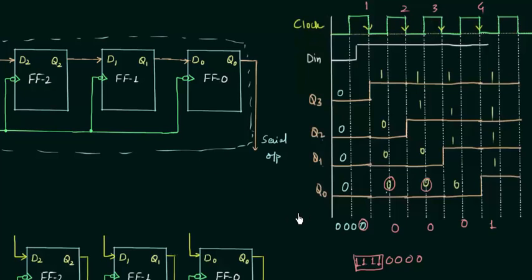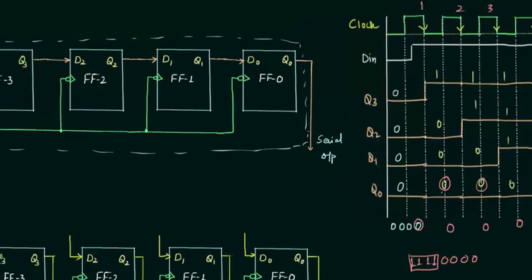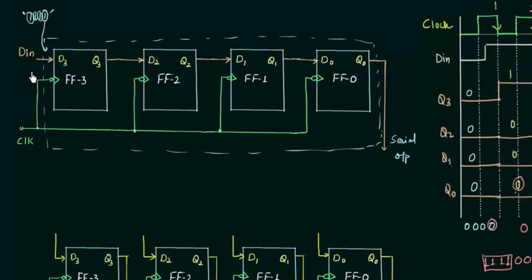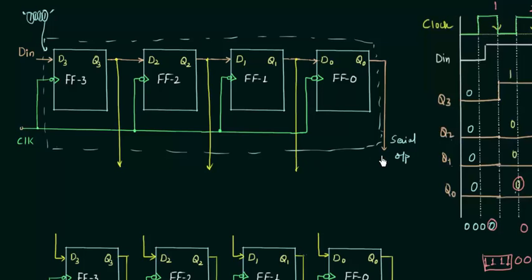This is a drawback because we require more clock pulses. In serial input parallel output mode, the serial input of data remains the same - the data is fed bit by bit. But the output is not serial. Instead, I will have Q3, Q2, Q1, and Q0 all as outputs. So instead of having one output in the IC, we have 4 outputs.